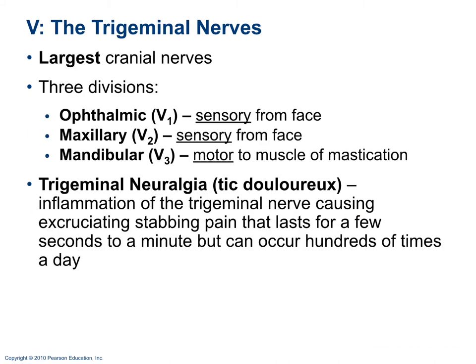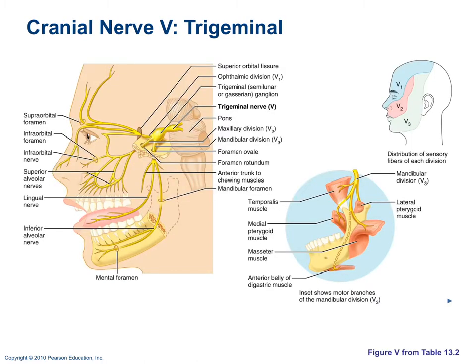Cranial nerve 5 is the trigeminal nerve, the largest of the cranial nerves, with three divisions: the ophthalmic division (sensory), the maxillary division (sensory), and the mandibular division (motor to muscles of mastication — chewing). A disorder called tic douloureux, or trigeminal neuralgia, is an inflammation of this nerve causing stabbing pain lasting seconds to a minute, potentially occurring hundreds of times a day. The picture shows the distribution of the three divisions on the face.